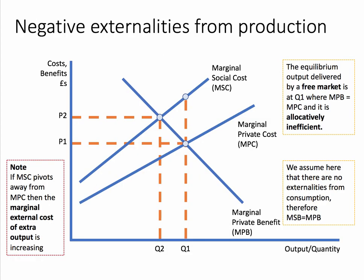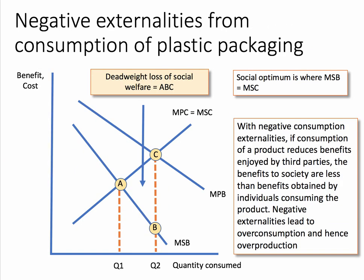Here is the analysis diagram. A good supporting diagram really helps the analysis. In this case the output of products that use plastic packaging leads to an increase in external cost, so the marginal social cost lies above the private cost and there is overproduction from society's point of view. You might want to show the deadweight loss of welfare. You could also look at negative consumption externalities — consumption of a product reduces the benefit of a third party, so society's benefits are less than individuals' benefits. Overconsumption and overproduction are at the heart of this answer.